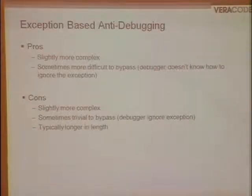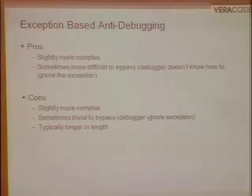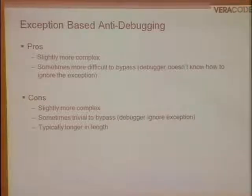Pros and cons of exception-based anti-debugging: on the pro side, it's slightly more complex, making it sometimes more difficult to bypass — the debugger may or may not know how to completely ignore the exception and give it back to the process for handling. On the con side, that same complexity may hurt us during implementation, and these are generally a little longer in length.